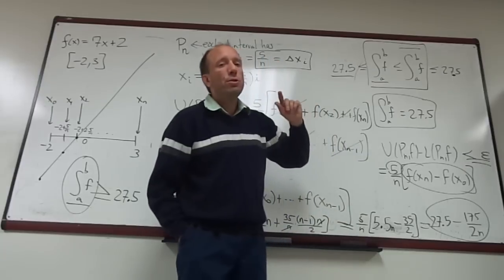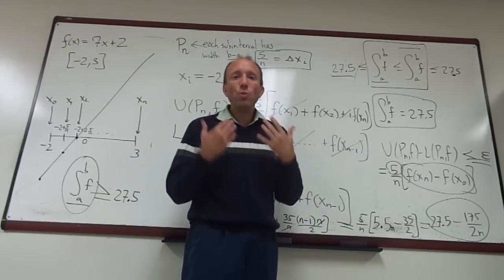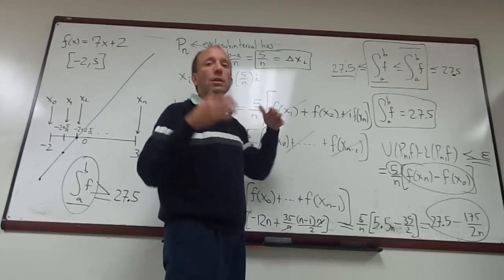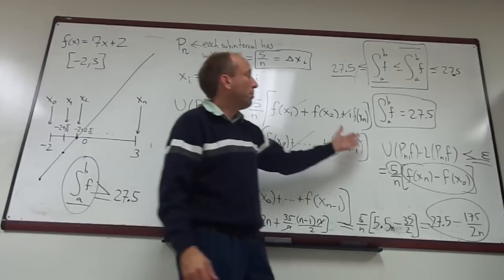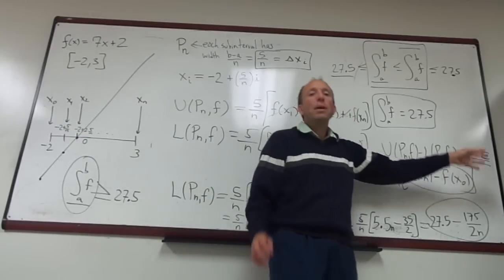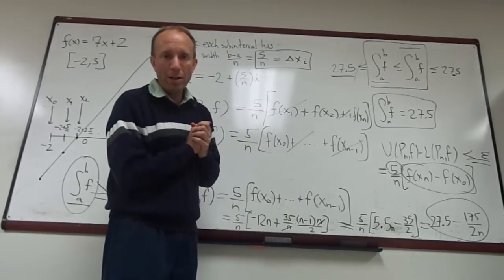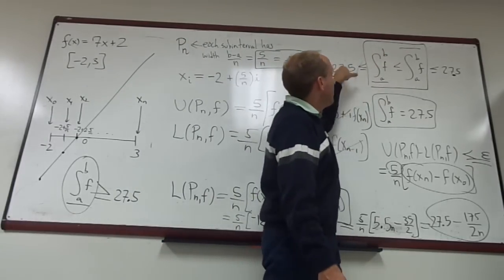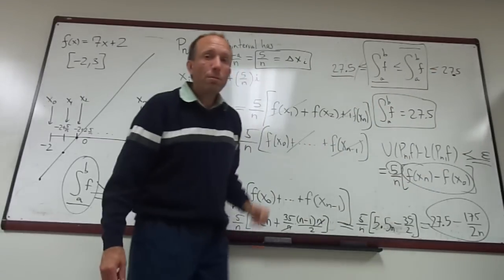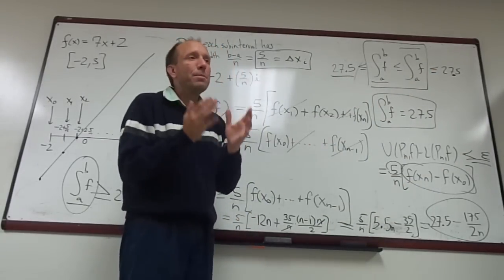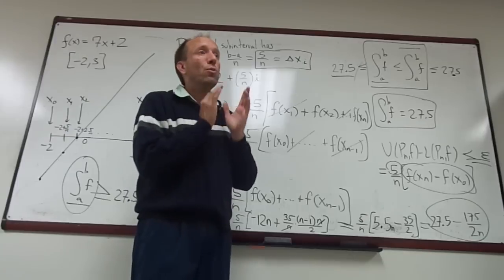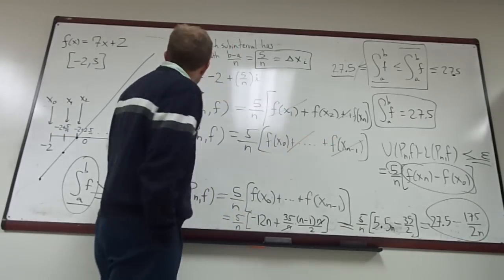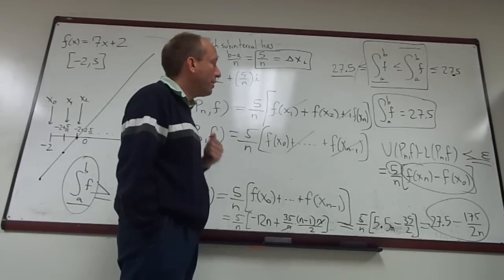What theorem 6.2 doesn't tell you, however, is what the value of the Riemann integral is. So I can tell you that this function is Riemann integrable simply from this simple calculation here. But if I ask you what is the value of the Riemann integral, that's where this work with upper and lower Riemann sums, and realizing that they're the same value equal to 27.5, that's where we need that part. Because theorem 6.2 doesn't actually tell you what the value of the Riemann integral is, the definite integral on some interval. So you have to have that as well.